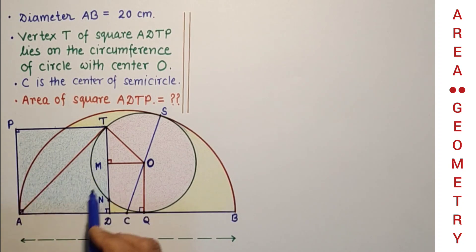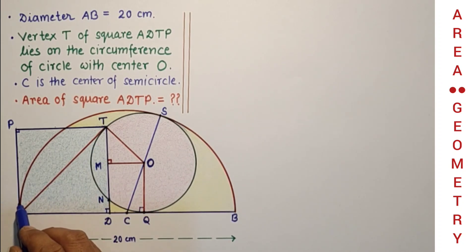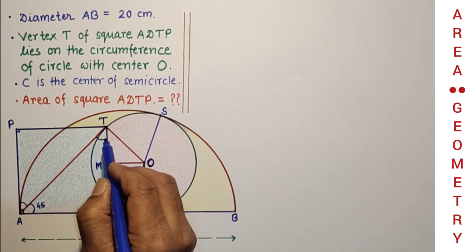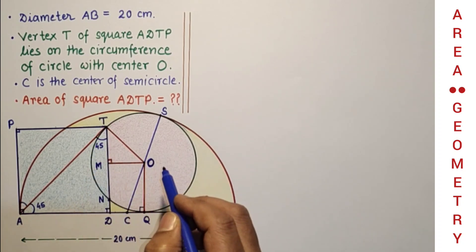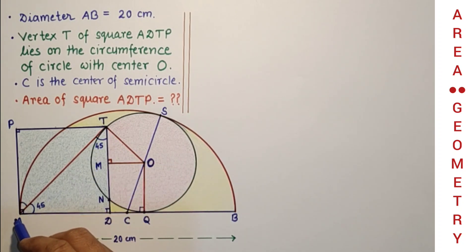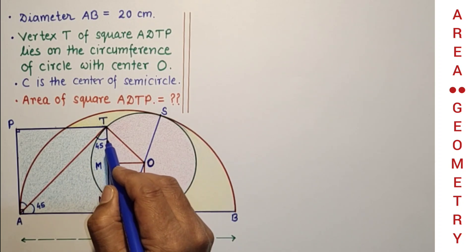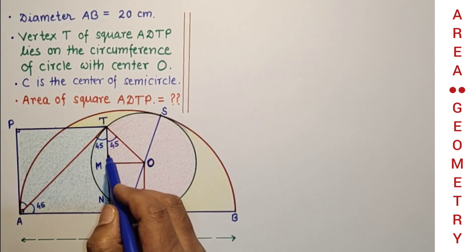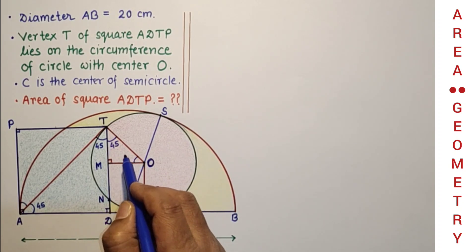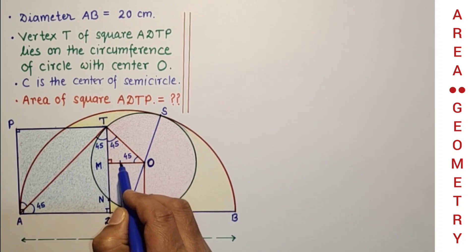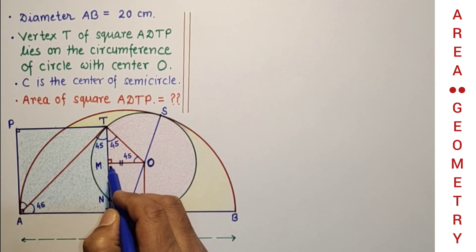Since ADTP is a square, AT is the diagonal and the diagonal bisects the angle, so angle TAD is 45 degrees. Since angle ATO is 90 degrees (radius perpendicular to tangent), the angle OTM is also 45 degrees. Since this angle is 90 and one part is 45, the other is also 45. So the two angles in triangle OTM are both 45 degrees, meaning OM equals MT.